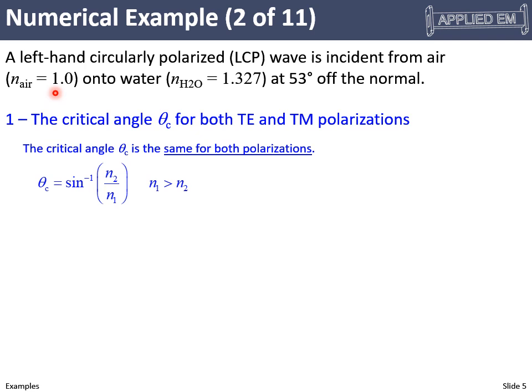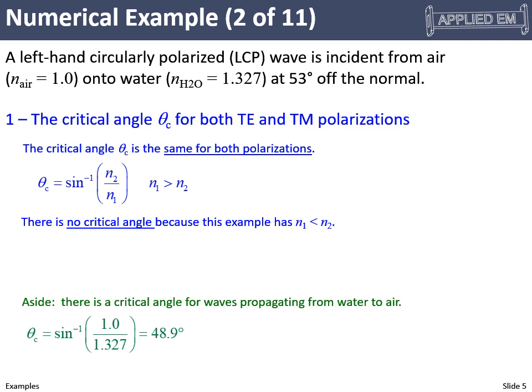For us, N₁ — the input medium — has a refractive index of 1, and the output medium has a refractive index of about 1.33. So the condition N₁ > N₂ is not met. It's a bit of a trick question: we actually don't have a critical angle. If we plug in numbers anyway, we'd get a complex result, which makes no sense. The correct answer is that there is no critical angle, simply because the input medium has a lower refractive index. Just for fun, if the wave were going from water into air, we would have a critical angle of about 48.9 degrees — but that is not the case for this problem.